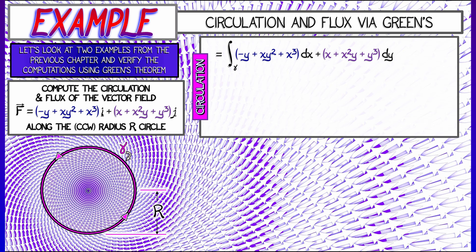integrating that over gamma is by Green's Theorem the same thing as integrating over the disk d that bounds that curve the following integrand. Take the partial with respect to x of the term in front of the y, that is x plus x squared y plus y cubed, then subtract off the partial with respect to y of quantity minus y plus xy squared plus x cubed.